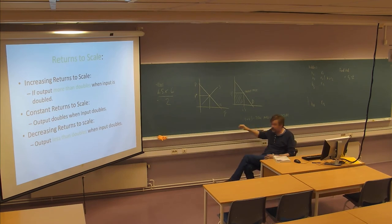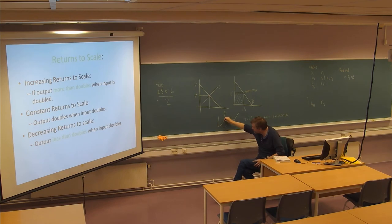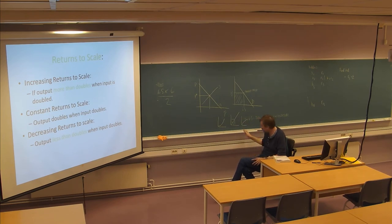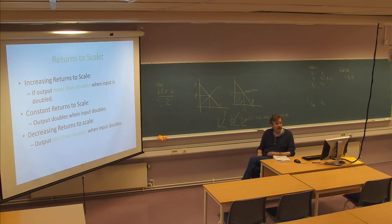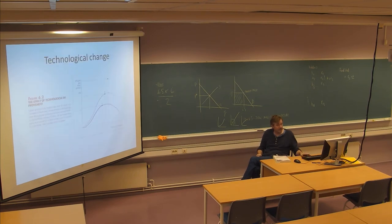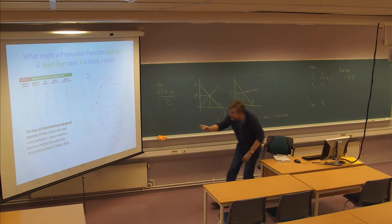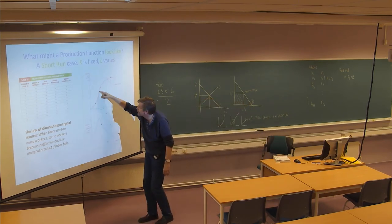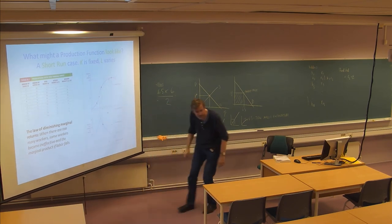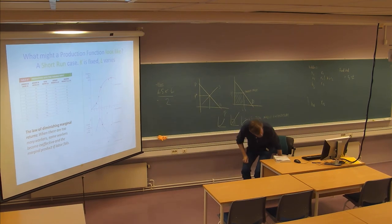A constant returns to scale production function would be linear — double the input, get double back. If it curves upward progressively, you have increasing returns to scale. If it curves the other way, you have decreasing returns to scale. The production functions we looked at earlier had all these elements at the same time: increasing returns to scale here, decreasing returns to scale there, and perhaps a linear point of constant returns to scale.